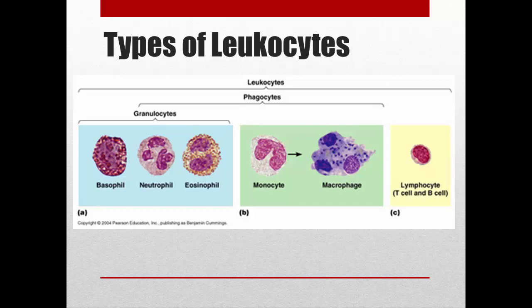As far as the numbers, neutrophils are the most abundant, followed by lymphocytes, then monocytes, eosinophils, and basophils in that order. I just want you to know them in order from most abundant to fewest. To remember that, just say 'never let monkeys eat bananas,' and that gives you the order.